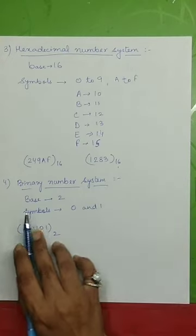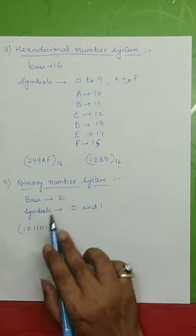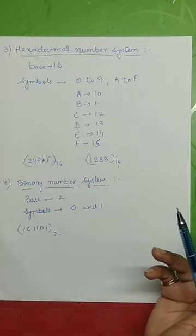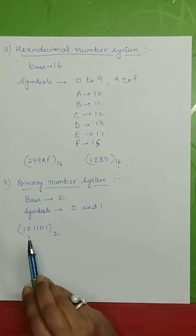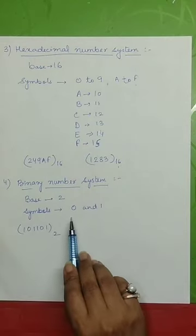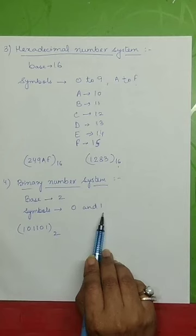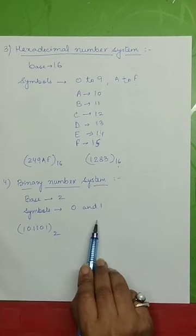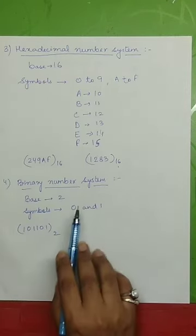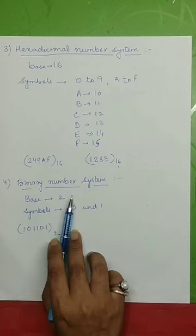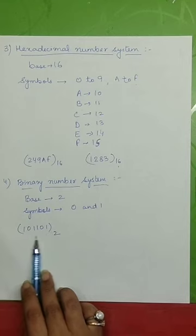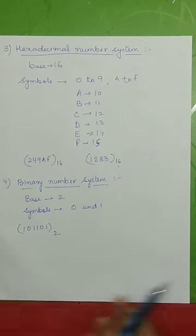Next we come to the binary number system. Binary means 2, so this system has the base 2 and uses only the symbols 0 and 1. Our computer understands binary language, making this number system very important. Any number in the binary number system will comprise of only 0s and 1s.